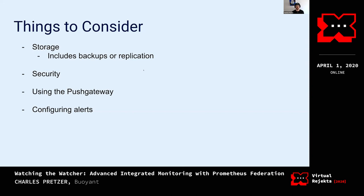The main reason you would want to use the push gateway is for something like a job that occurs every once in a while — like a cron job, or a Kubernetes Job resource. There are limited use cases for it, but you should know it's available. Finally, there's configuring alerts — the alert manager is a huge part of Prometheus. Some people will tell you that you want to make sure your alerts aren't too aggressive, but they also need to give you enough information.